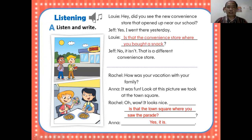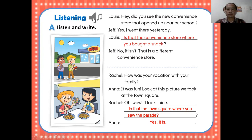Saya ulang lagi ya, kalian perhatikan yang warna merah — pertanyaannya, jenis pertanyaannya, diperhatikan strukturnya atau cara menyusun pertanyaan. Listen and write: 'Hey, did you see the new convenience store that opened up near our school?' 'Yes, I went there yesterday.' 'Is that the convenience store where you bought a snack?' 'No, it isn't. That is a different convenience store.' 'How was your vacation with your family?' 'It was fun. Look at this picture we took at the town square.' 'Is that the town square where you saw the parade?' 'Yes, it is.'